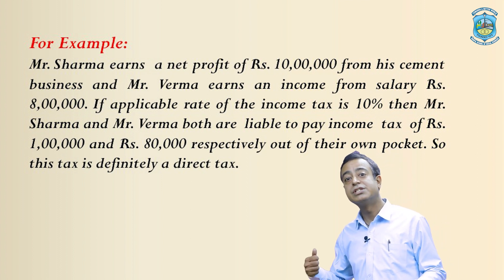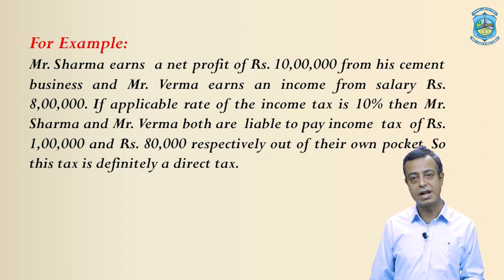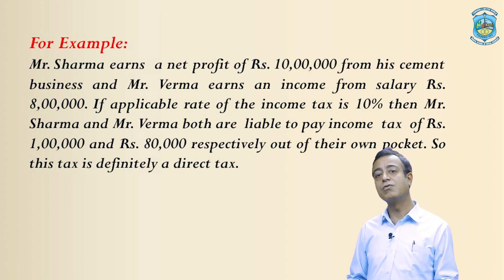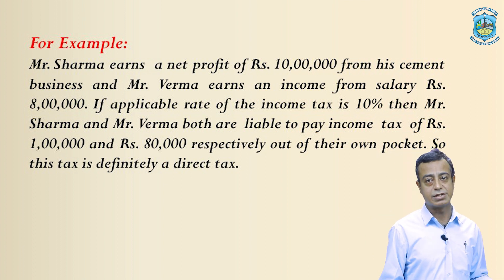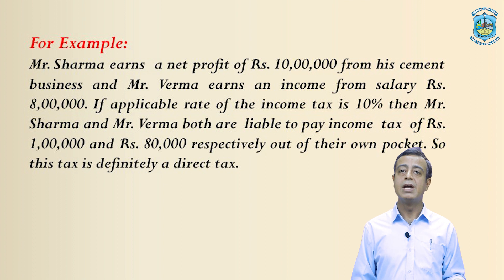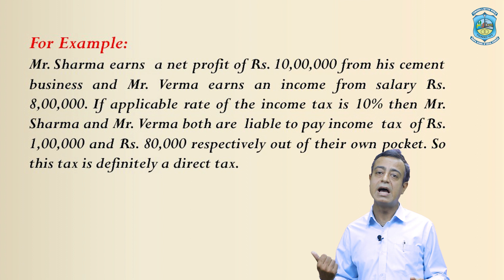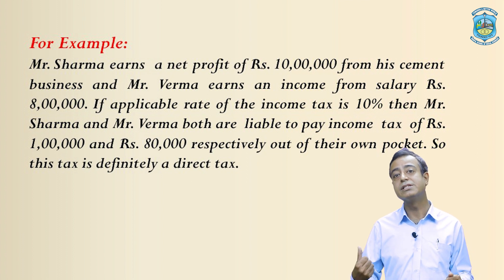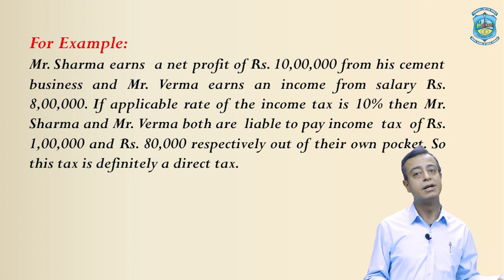Mr. Sharma has a cement business and Mr. Verma is an employee of the company. Mr. Sharma earns a profit of rupees 10 lakh from his cement business and Mr. Verma earns an income from salary of rupees 8 lakh. Suppose the applicable tax rate is 10 percent. In this case, Mr. Sharma has to pay 1 lakh rupees and Mr. Verma has to pay 80,000 rupees as income tax on their own income. They cannot recover this amount of tax from any other person. They have to pay this tax out of their own pocket only. So, friends, this tax is 100 percent a direct tax.